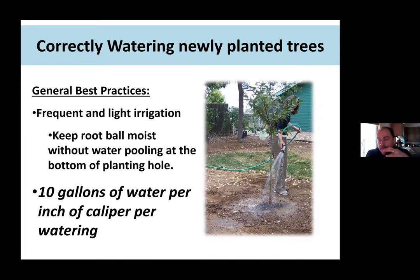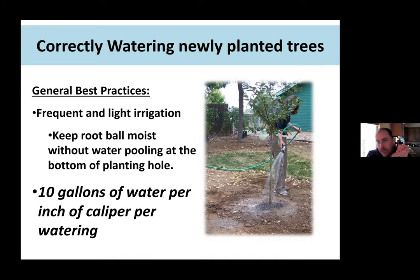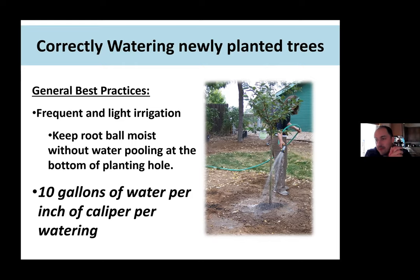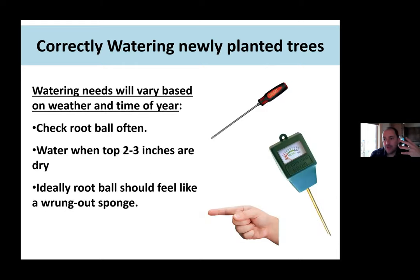Keep the root system moist without flooding the tree and causing water to accumulate at the bottom of the planting hole. Our recommendation is 10 gallons of water per inch of trunk diameter per watering. So for a one-inch tree, water with 10 gallons each time. How often you water depends on weather and precipitation — this time of year it might be once a week; as it warms up, it might be two times a week; in the 90s and hundreds, it might be three or four times a week. There's no substitute for going to the tree and probing the root ball with your finger or a screwdriver to check moisture. The root ball should feel like a wrung-out sponge — not dripping wet, not bone dry.